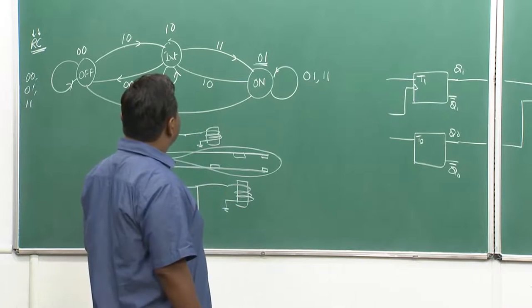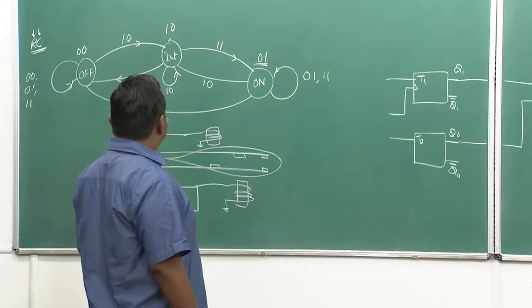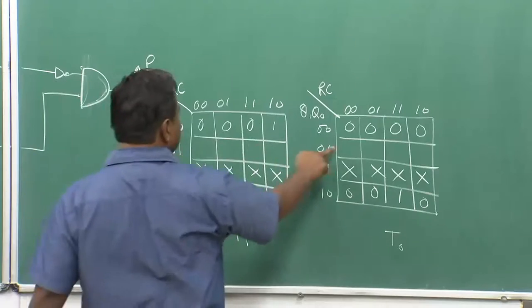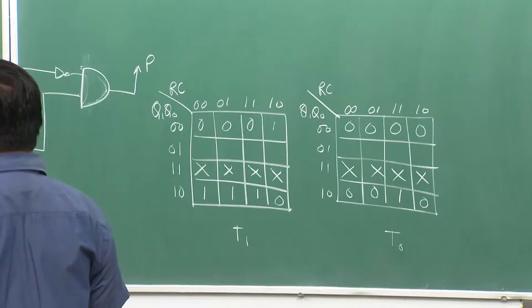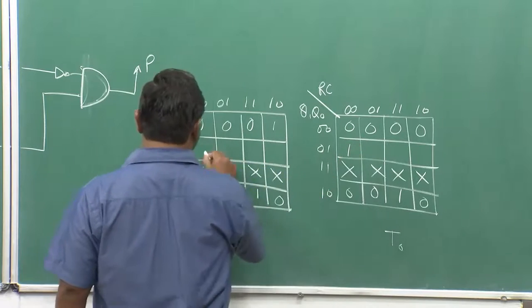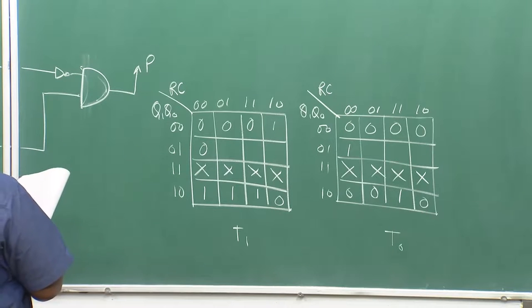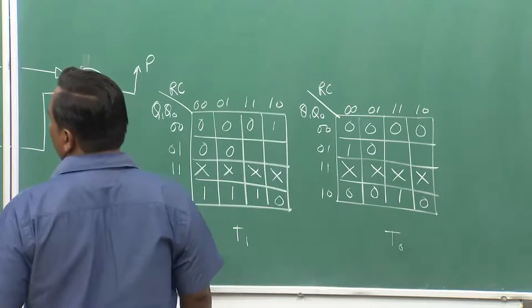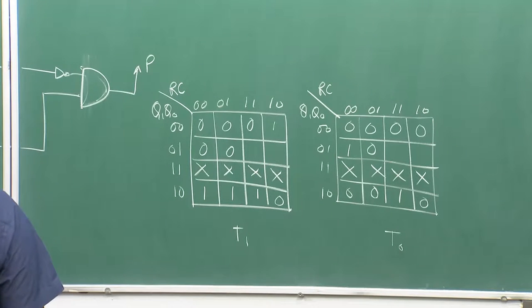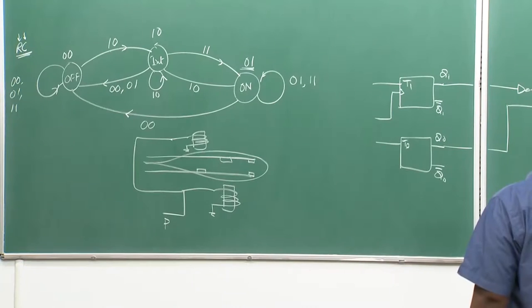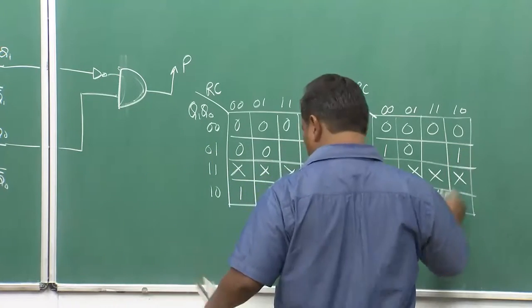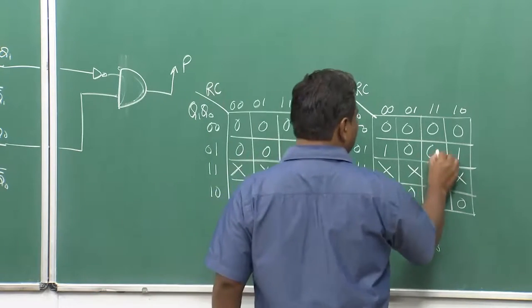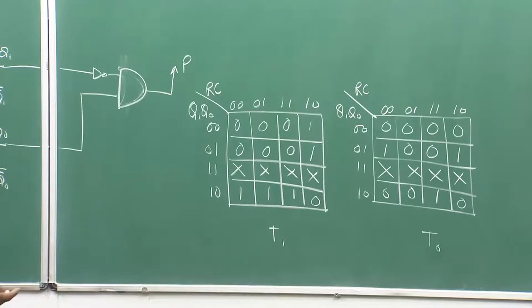For state 01 (on state): if rc = 00, it goes from 01 to 00, so Q1 is not toggled but Q0 is toggled — T1 = 0, T0 = 1. If rc = 01 you remain in same state, so no toggling: T1 = 0, T0 = 0. When rc = 10, you go to the 10 intermediate state, so both have to be toggled: T1 = 1, T0 = 1. When rc = 11 you remain in the same on state, so no toggling. So this completes the Karnaugh map and now you can do the optimization.